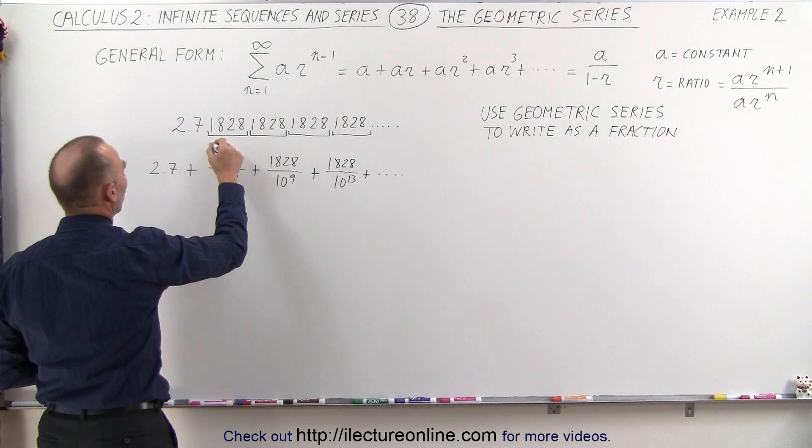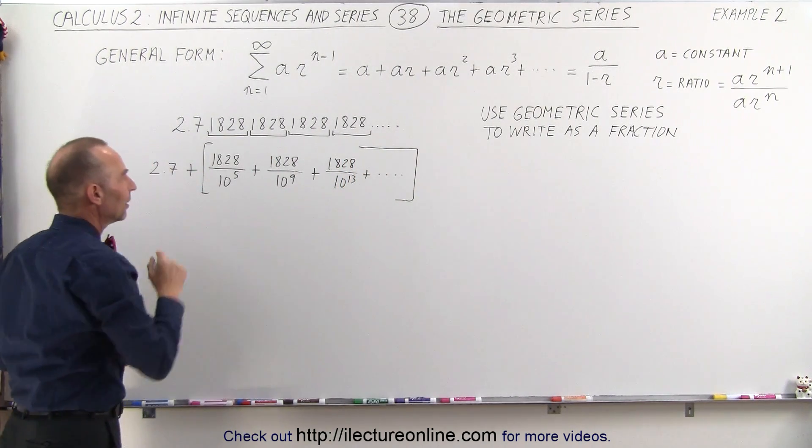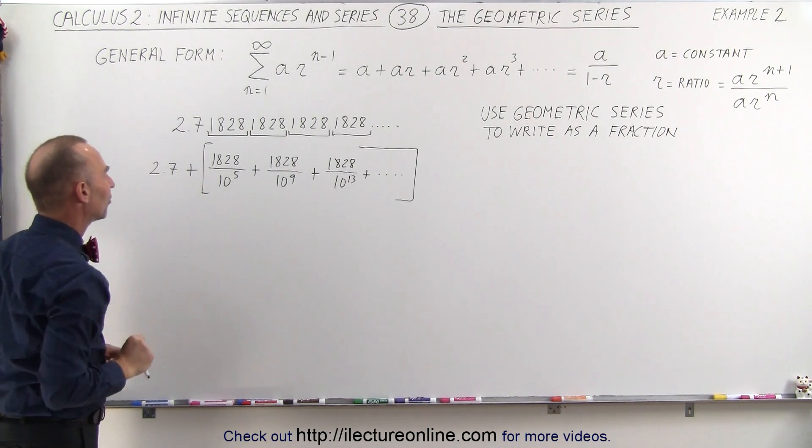So we can take this portion of it and probably write it as a geometric series, and then add that to 2.7.